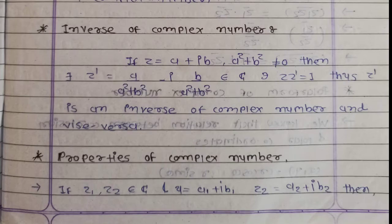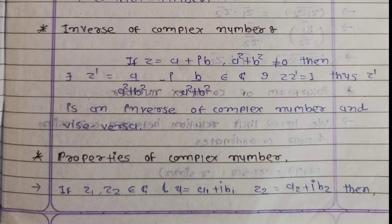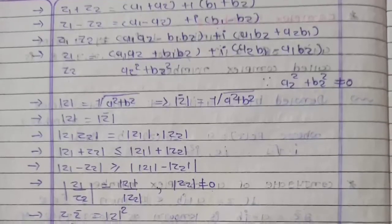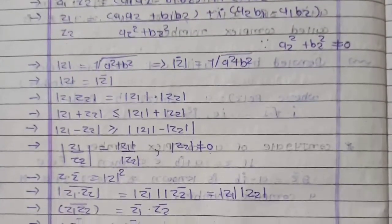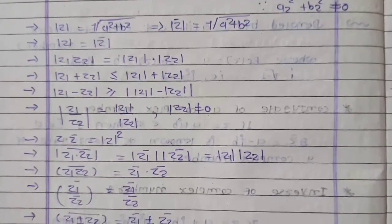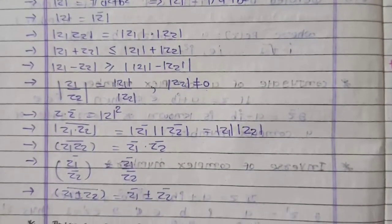Definition of inverse of a complex number: if z is equal to a plus iB, then the inverse z' satisfies z into z' equal to 1, and z' is equal to z bar over (a squared plus b squared). Now we look at properties of complex numbers. For complex numbers Z1 and Z2, where Z1 is equal to A1 plus iB1 and Z2 is equal to A2 plus iB2, the properties hold.